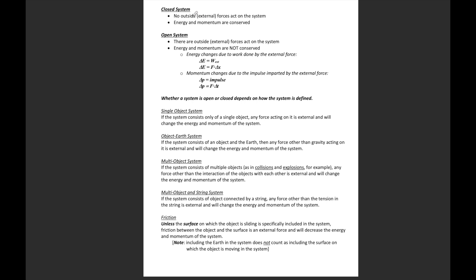First and foremost, a closed system — there are no external forces acting on the system and energy and momentum are going to be conserved. They're going to tell you what's part of the system: is it a block, a block and spring, a block and earth? You draw those objects and put a box around them. If any forces come from outside that box, then it is not closed — because in an open system there are outside forces that do work on the system, and the energy is going to change by the amount of work done.